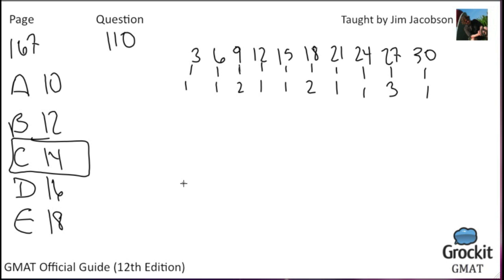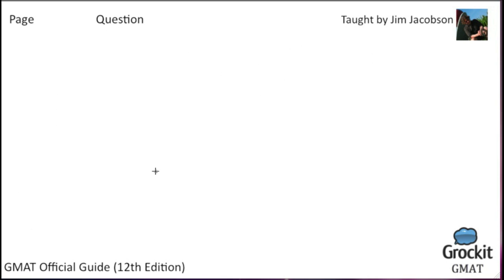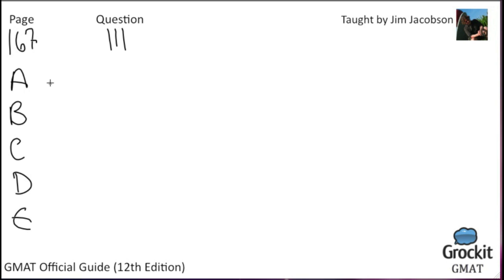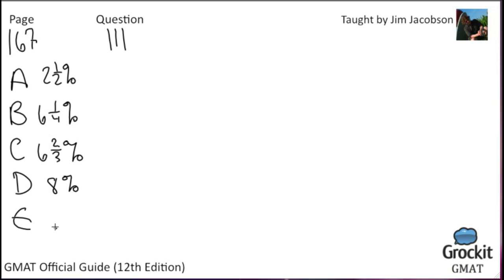Being comfortable with primes, factors, and multiples is another key to the GMAT, because it shows up in the data sufficiency side of quantitative questions too. On to question 111, page 167. Answer choices are around 6.25% range. If candy bars that regularly sell for $0.40 each are on sale for two for $0.75, what is the percent reduction in the price of two such candy bars purchased at the sale price?